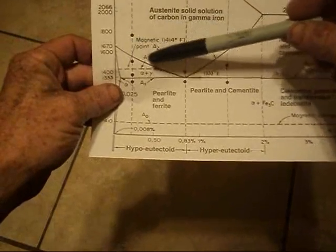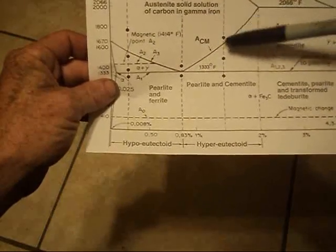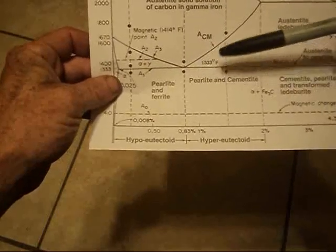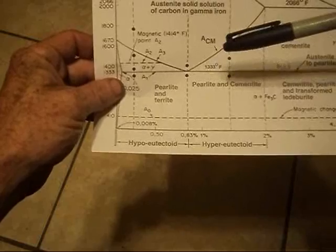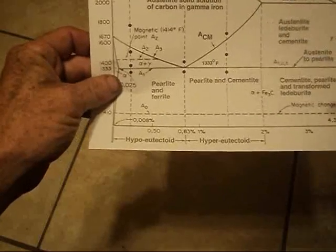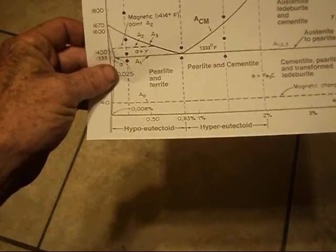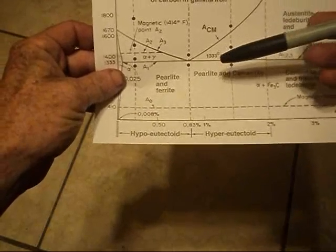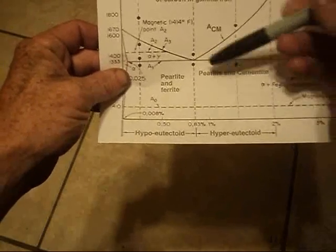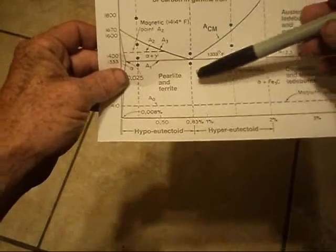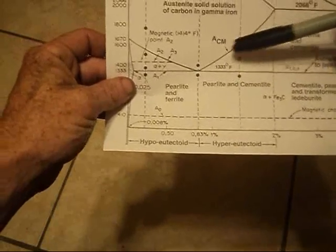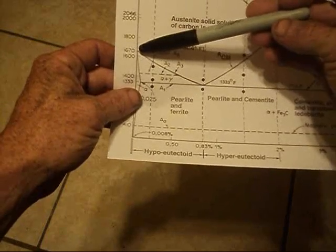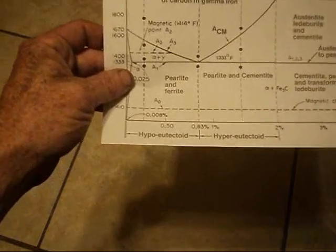This line, however, this is the upper transformation temperature line. It does change. So the quench temperature that you should quench any given steel at is different. The only one that you should actually quench precisely at non-magnetic is 1084. Now, above this line in carbon content and below this line in carbon content, the quench temperature rises that you should quench your steel at.